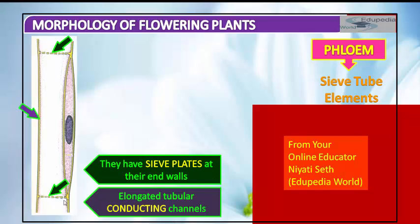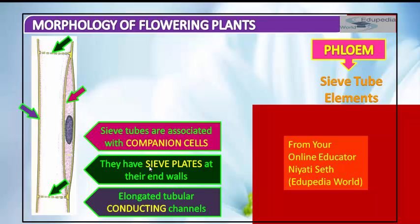The sieve plates at the end walls have large pores which allow food products to get into and out of the phloem for transport to different areas of the plant — that is the main significance of the sieve plate. Sieve tubes are associated with companion cells, and the function of the sieve tubes is controlled by the nucleus of the companion cells.